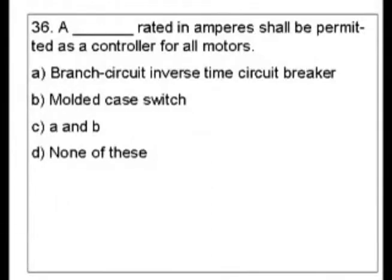Question 36. A blank rated in amperes shall be permitted as a controller for all motors. So A: Branch circuit inverse time circuit breaker. B: Molded case switch. C: A and B, or D: None of these.